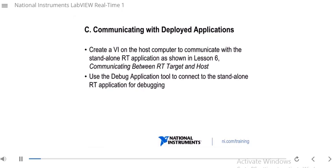At this point, we have a deployed application — a startup RT application that's running on our RT target. So how would we communicate with that startup RT application? One way is we would create a VI on the host computer and communicate with it as talked about in Lesson 6. We talked about different methods for network communication between the RT target and the host: network published shared variables, network streams, and standard protocols such as TCP and UDP. We can use all those methods on our host computer to talk to our RT application.